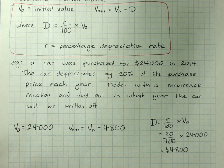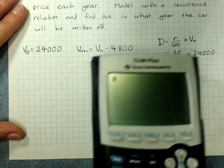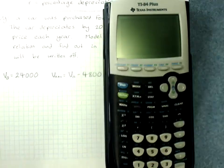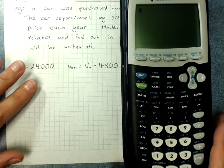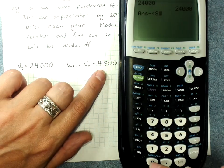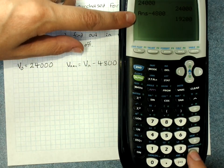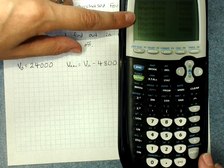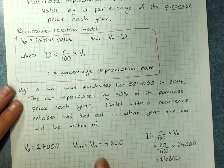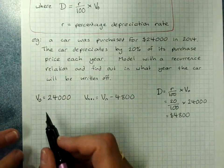To find out how many years before we hit zero, use the recurring pattern in the graphics calculator. Enter in your starting value, hit enter, minus 4,800, and then count the years. Year 1, 2, 3, 4, 5 — so it takes five years. We started in 2014, so 2015, 16, 17, 18, 19. The car will be written off in 2019.